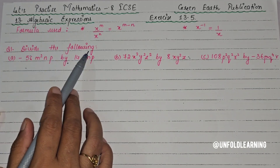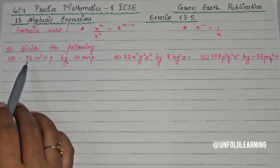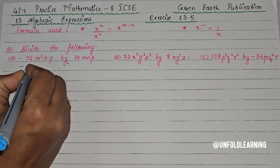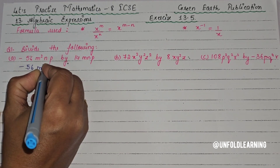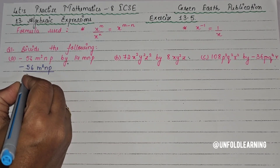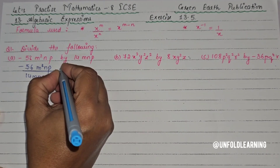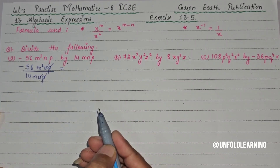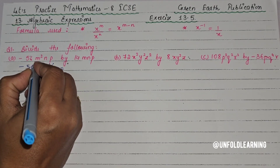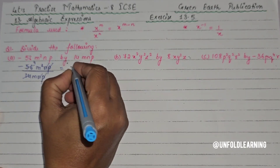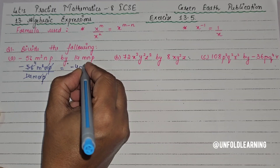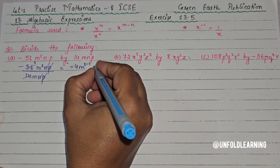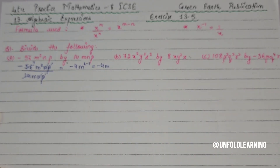Starting with Question 1: divide the following — minus 56 m squared n p by 14 m n p. We write minus 56 m squared n p upon 14 m n p. Here p and p cancel, n and n cancel. 14 fours are 56, so we get minus 4, and m to the power 2 minus 1 gives m to the power 1, so the answer is minus 4m.